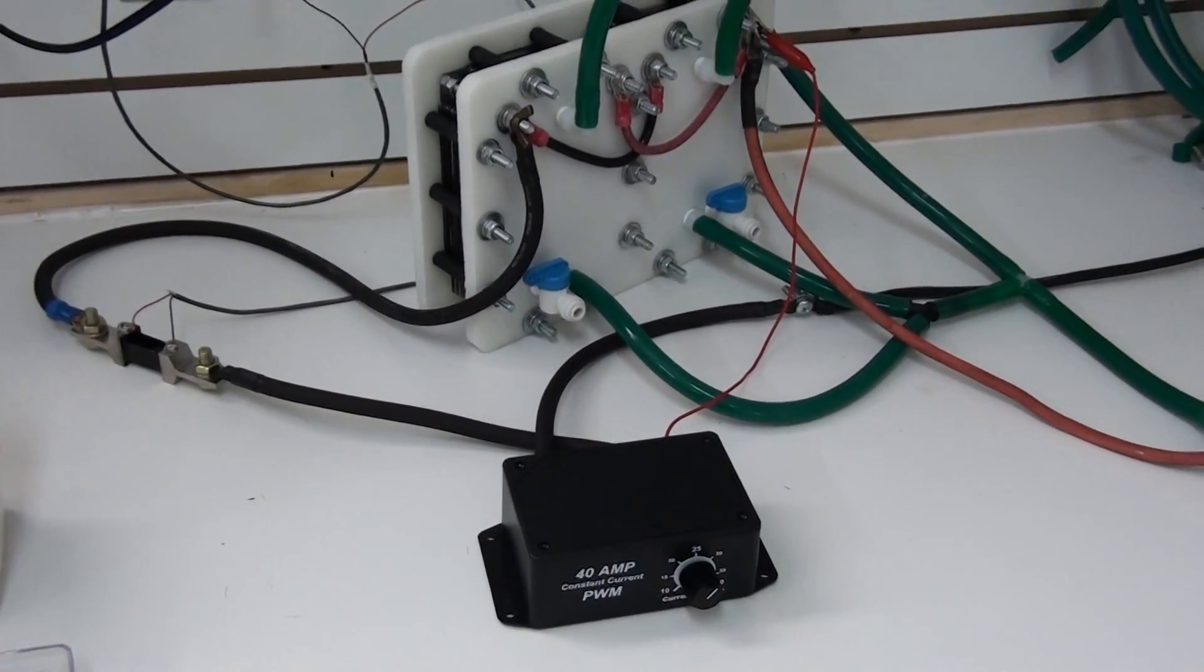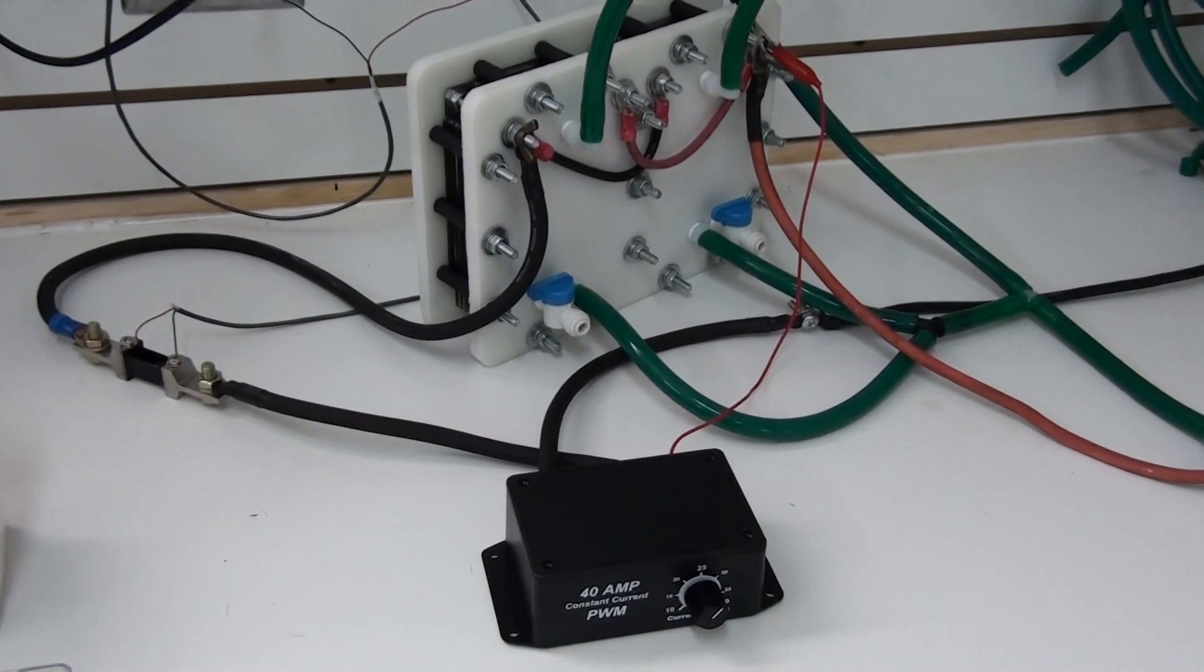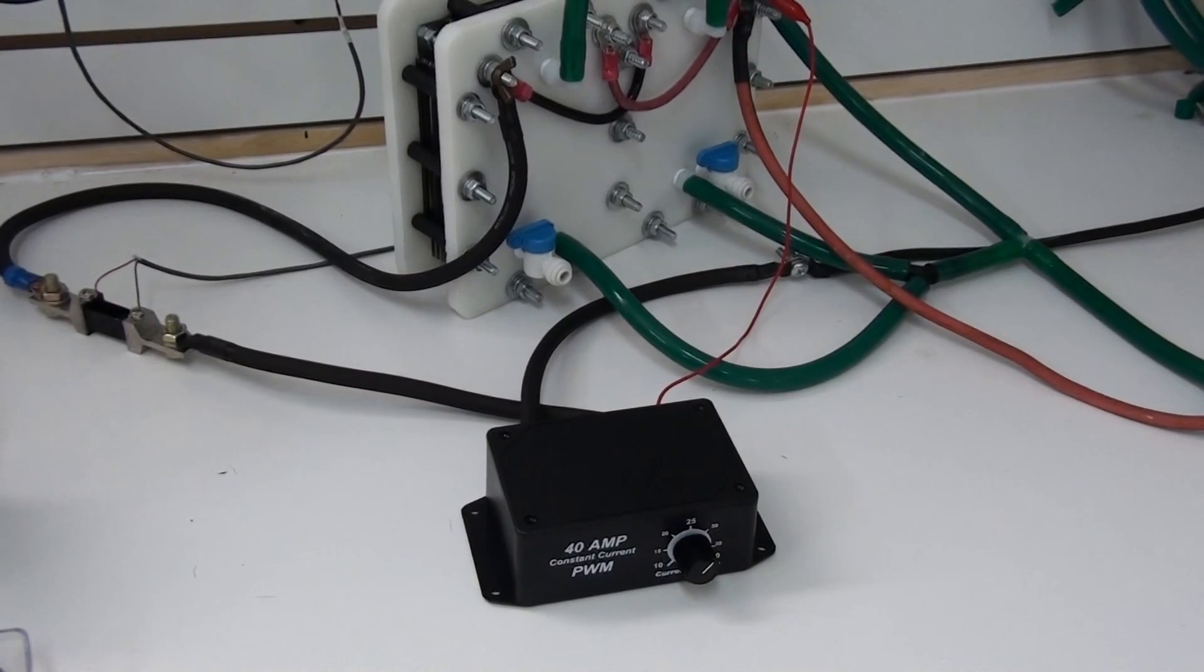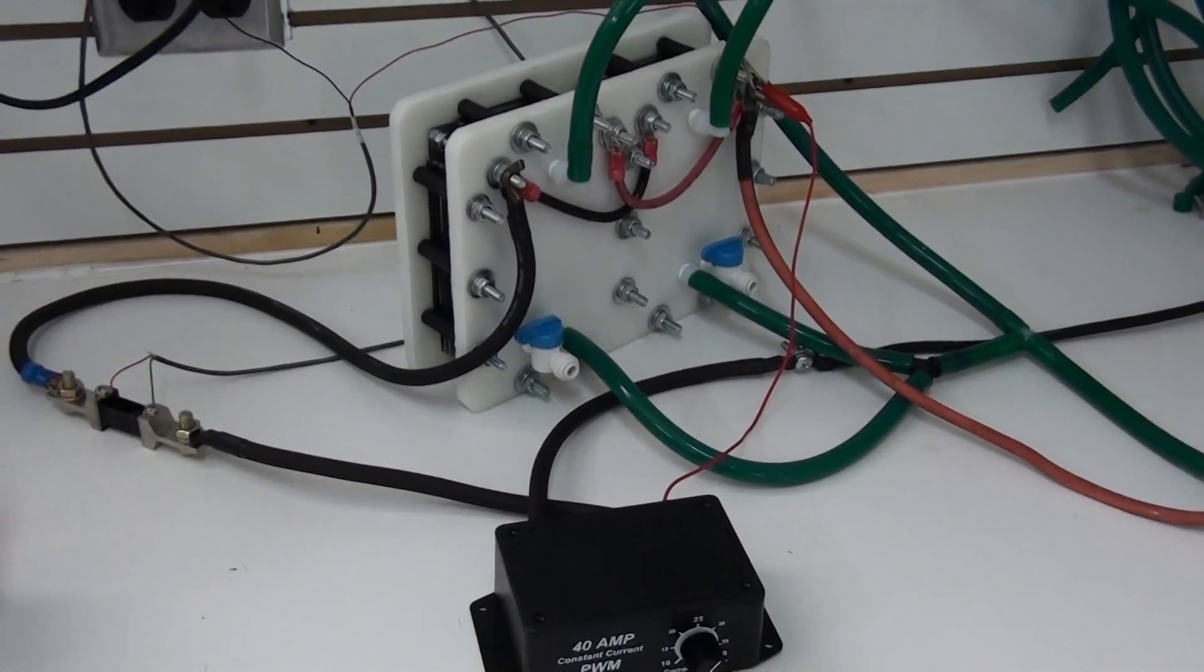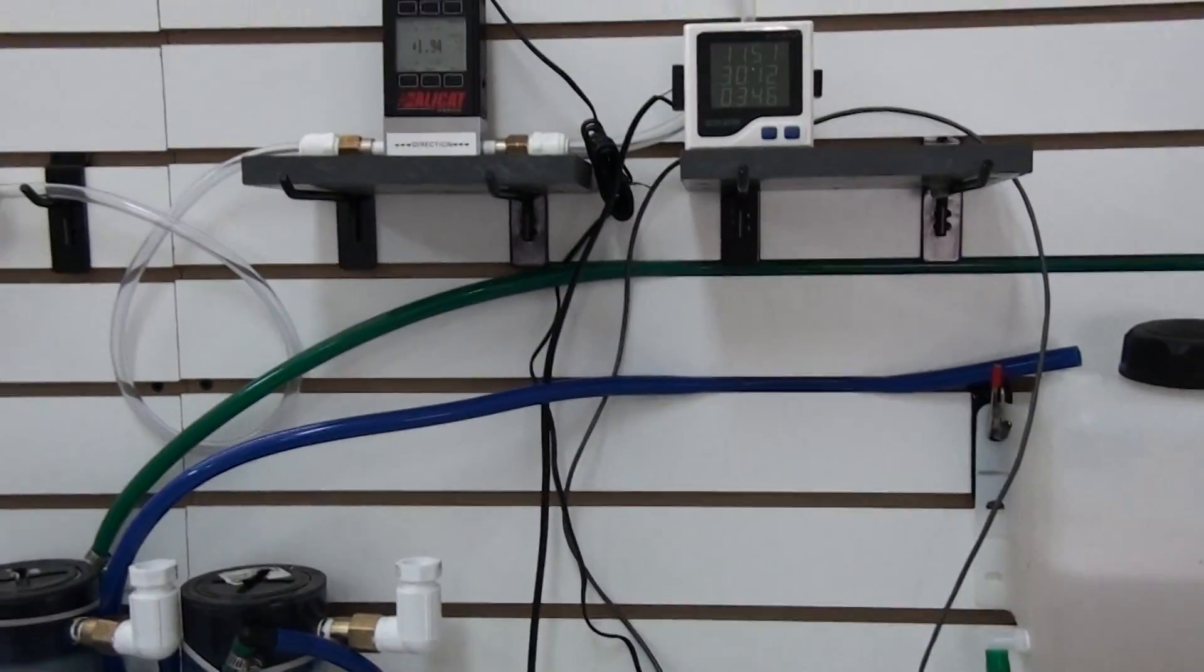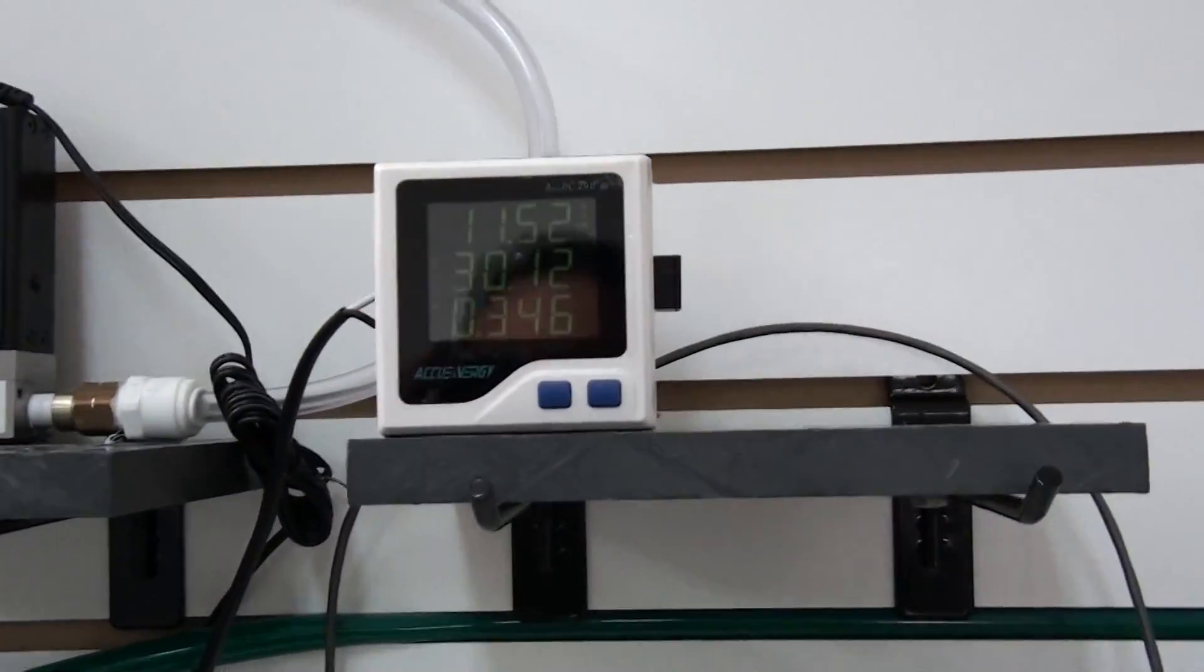With this kit you have a PWM. What this does is it regulates the amperage that goes to the cell. Right now I've got it running at 30 amps.